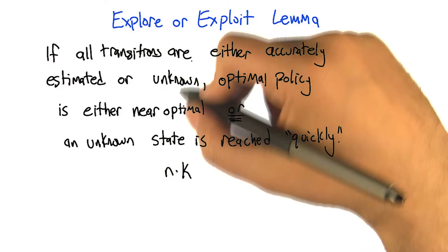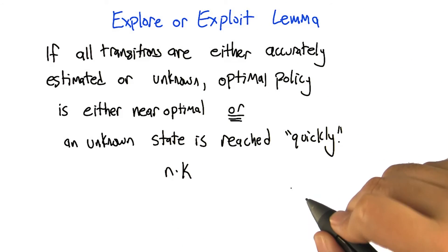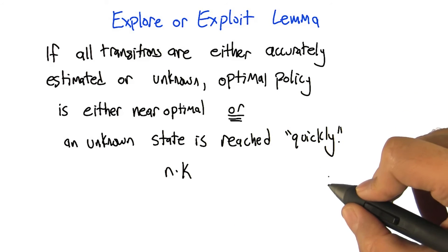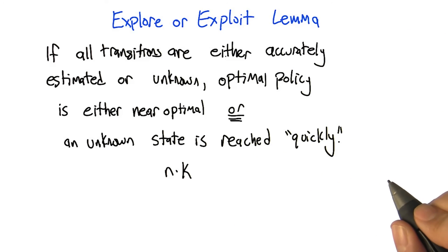And the number of steps before we learn something new is bounded by a polynomial in the various quantities. So we can't actually run for a very long time without either learning something new or being near optimal. I feel like there's some metaphor for life here. How would that go? I'm not sure. Something about grad school. Yeah, you can't always just go there. Oh, I'm pretty sure you can. And I proved it for many years.